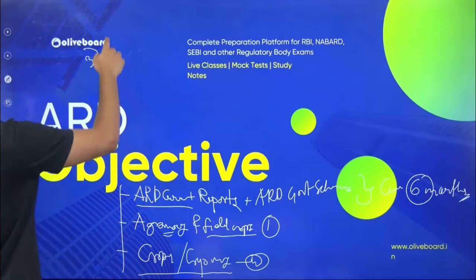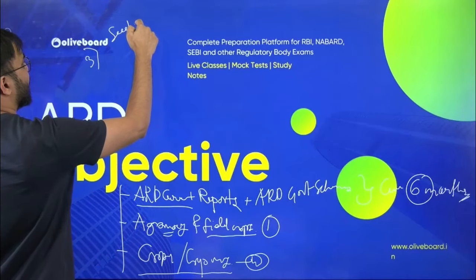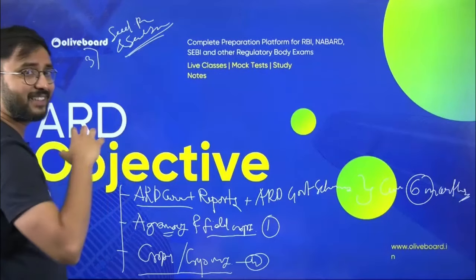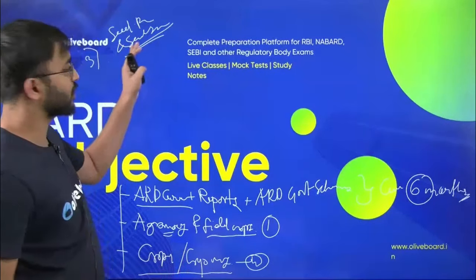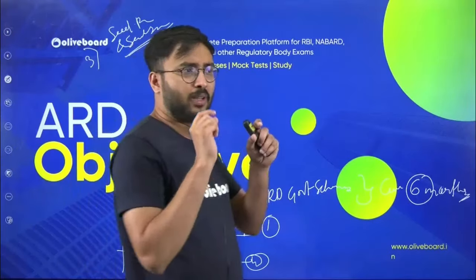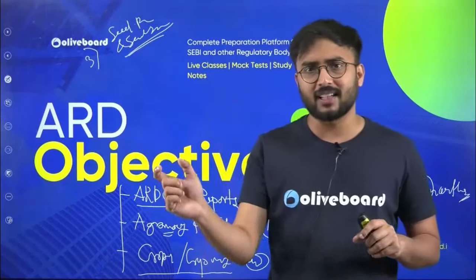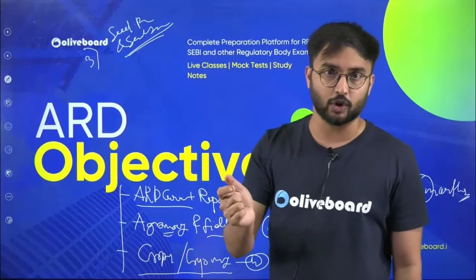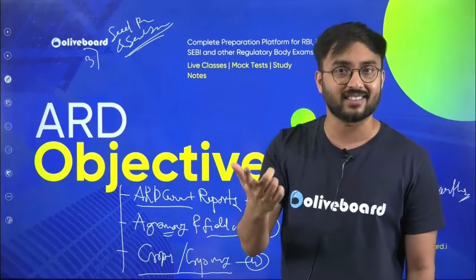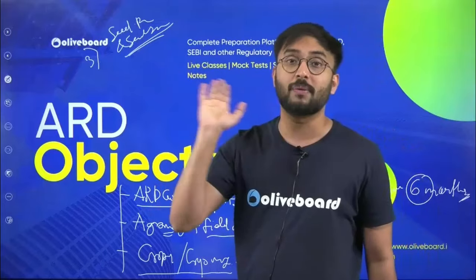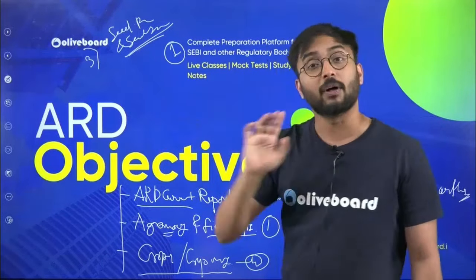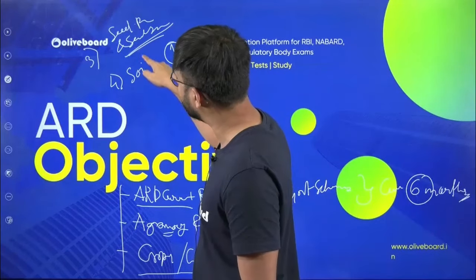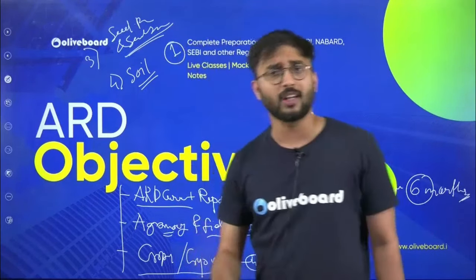The fourth topic is seed production and seed science. Important concepts here include classification of seeds according to certification, purity, and color tags — these may be asked for one-marker questions rather than two-markers.